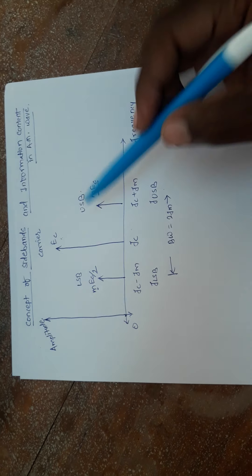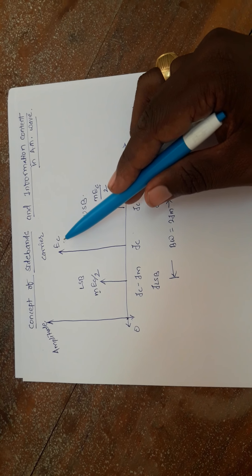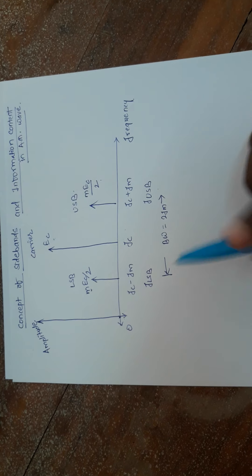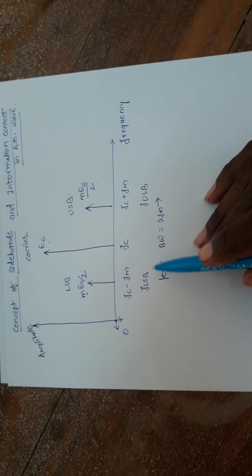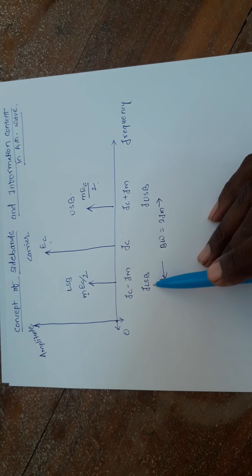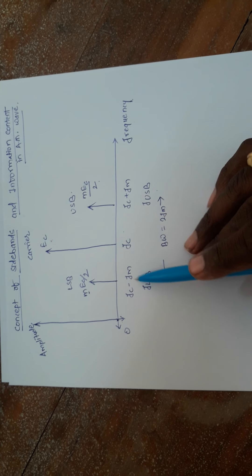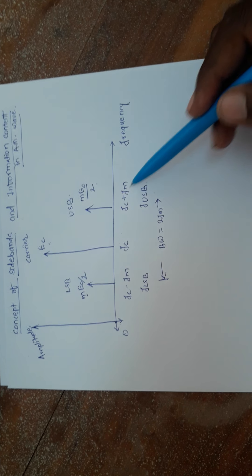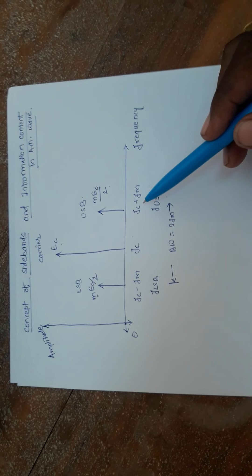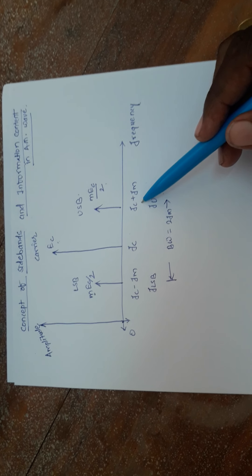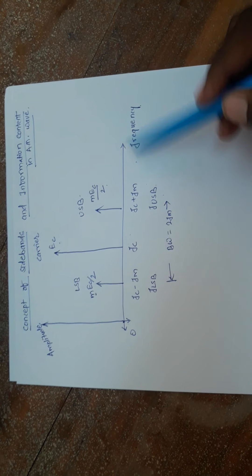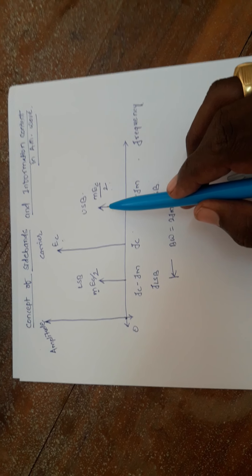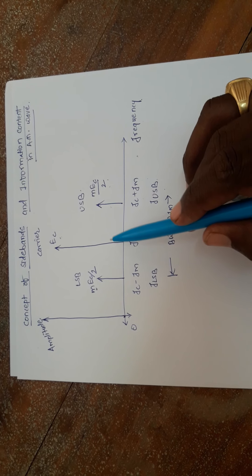In this way, the carrier amplitude is independent of your modulation index. Now, while defining the frequency of FLSB, we say that the FLSB component is Fc minus Fm. Whereas, the upper sideband frequency component, FUSB, is demonstrated or denoted by Fc plus Fm. These two sidebands are created when we do the amplitude modulation of the signal.